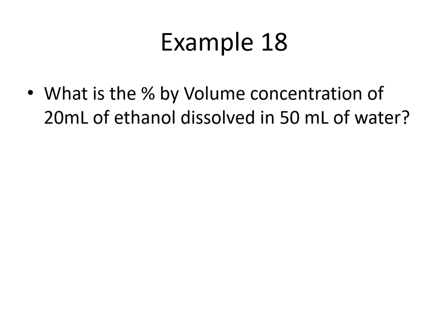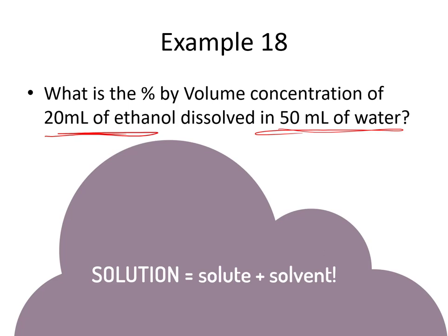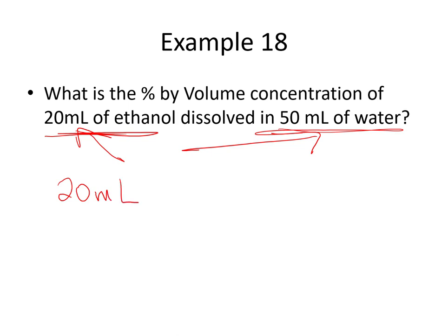Let's jump straight into an example problem. What is the percent by volume concentration of 20 milliliters of ethanol dissolved in 50 milliliters of water? My solute is ethanol and my solvent is water. But remember, the formula uses the volume of solution — so I need to add both quantities together. That gives me 20 milliliters of ethanol over 20 milliliters of ethanol plus 50 milliliters of water, then multiplied by 100.